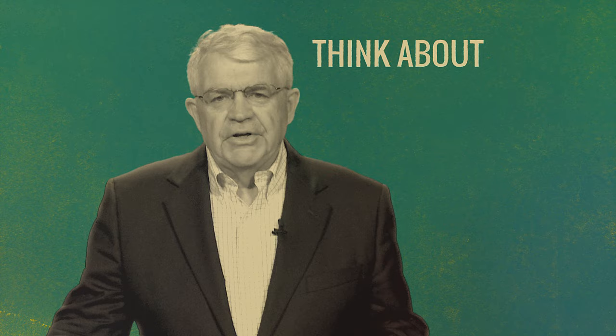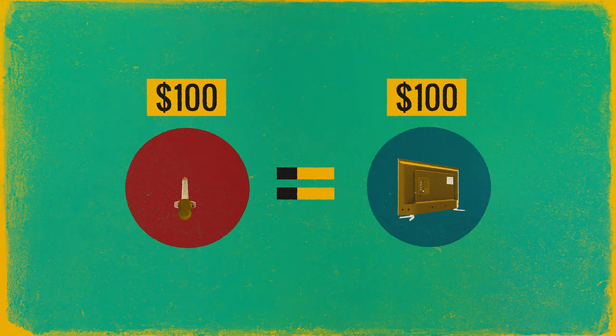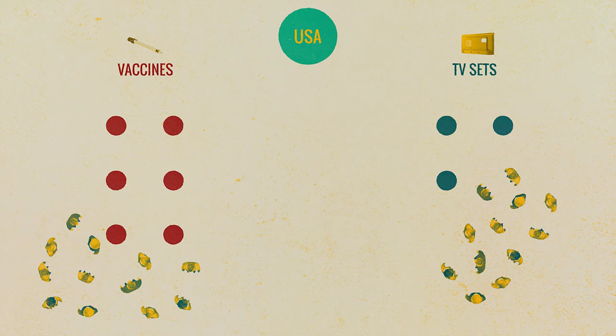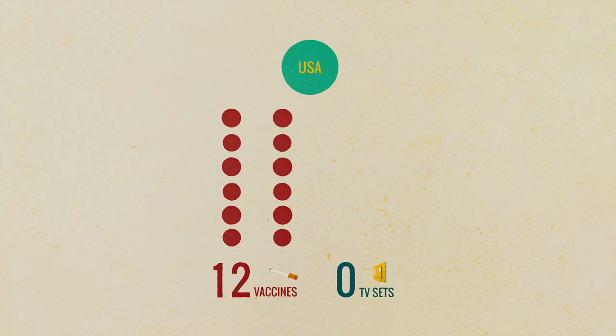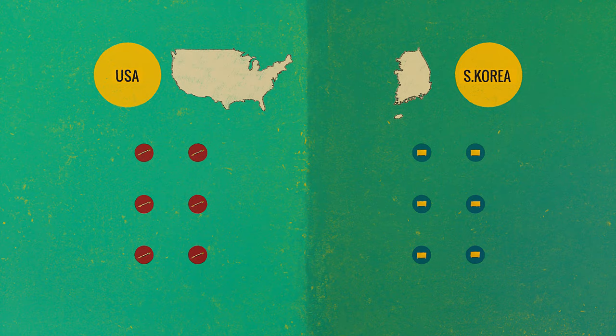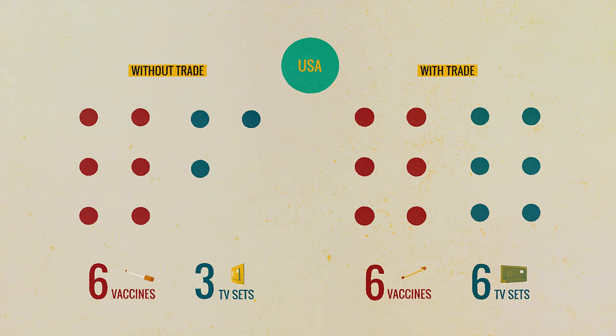Let's think about the gains from trade numerically. Suppose a unit of vaccine is $100 and a TV set is $100 — the same price, so you can exchange one unit of vaccine for one TV set at a one-to-one ratio. The U.S. could reduce TV production by three units by moving workers out of TV production into vaccine production, which increases vaccine production by six units. With those six units of vaccine, the U.S. can trade with Korea and get six TV sets. At the end, it has six TV sets — three more than if it produced them itself — and the same amount of vaccines as before. So this is a gain from trade.